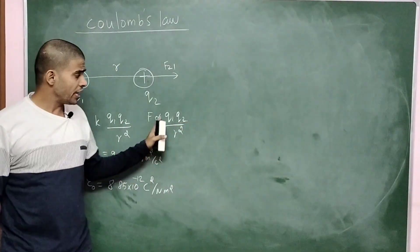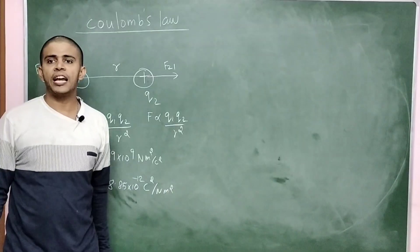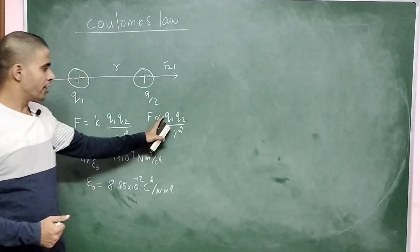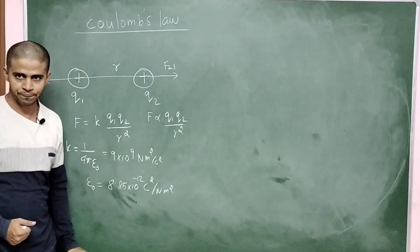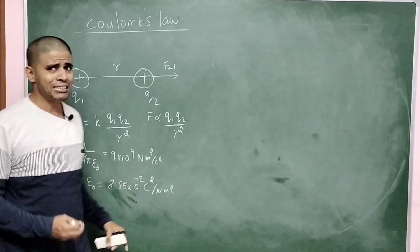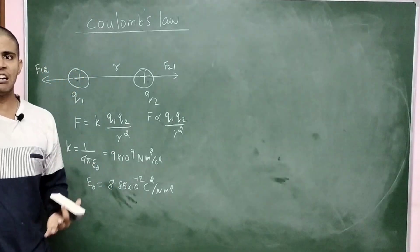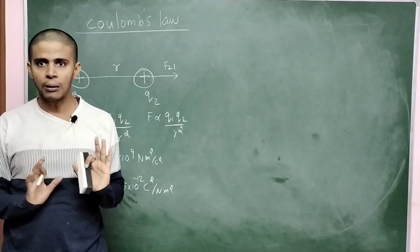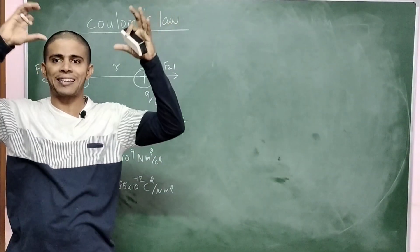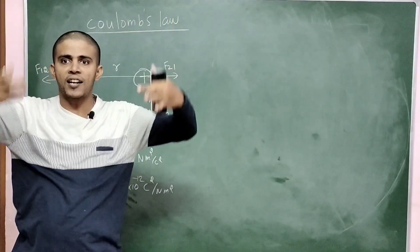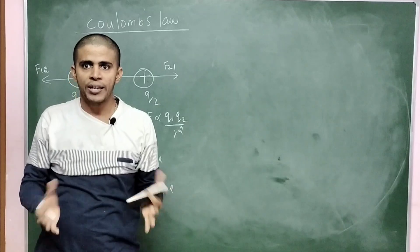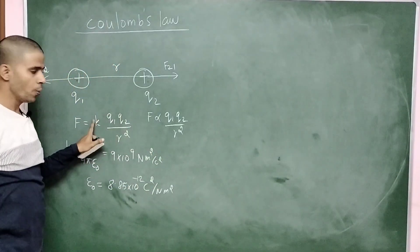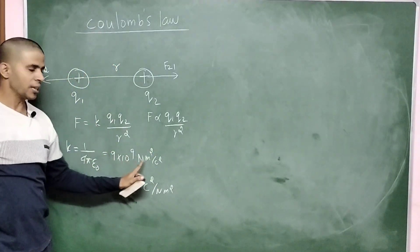In physics, wherever we have a proportionality symbol, we remove it by introducing a constant. That constant is K, also called the dielectric constant or Coulomb's constant. When the two charges are in empty space, K has a value of 9 × 10⁹.